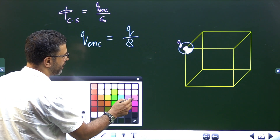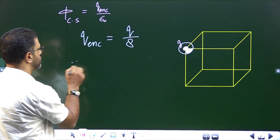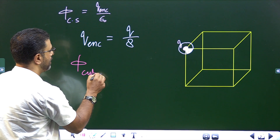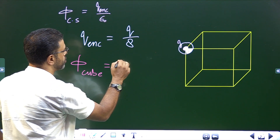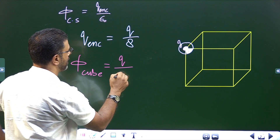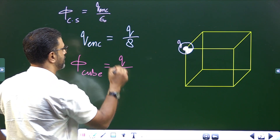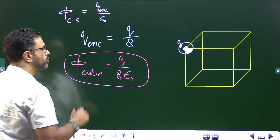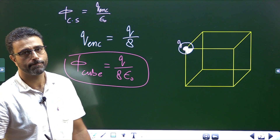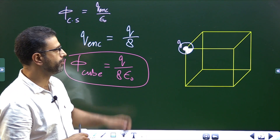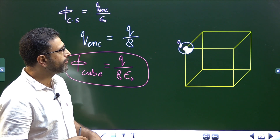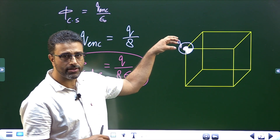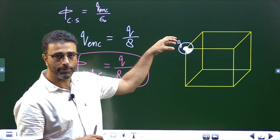Now we can find the flux through the entire cube. Flux through the cube = q_enclosed / ε₀ = (q/8) / ε₀ = q / (8ε₀).